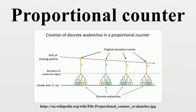An ionizing particle entering the gas collides with a molecule of the inert gas and ionizes it to produce an electron and a positively charged atom, commonly known as an ion pair. As the charged particle travels through the chamber it leaves a trail of ion pairs along its trajectory, the number of which is proportional to the energy of the particle if it is fully stopped within the gas. Typically a 1-MeV stopped particle will create about 30,000 ion pairs.